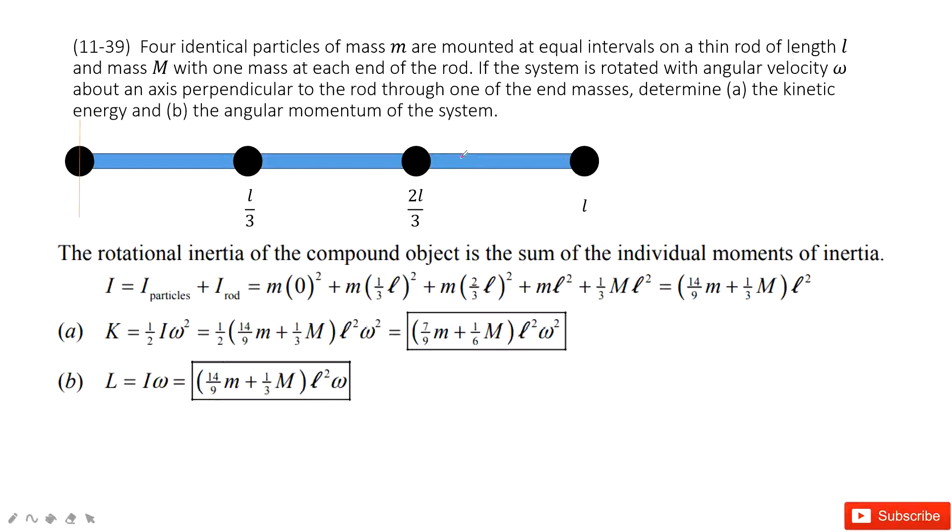It tells us it rotates at one end of the mass. So we consider the rod at this side, at this axis. And then the angular velocity is omega. Now we need to find the kinetic energy and angular momentum for this system.